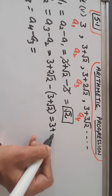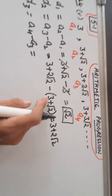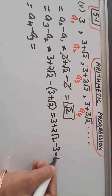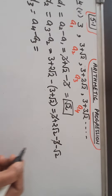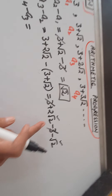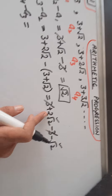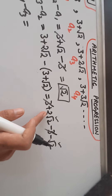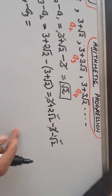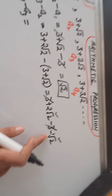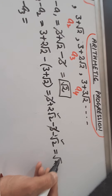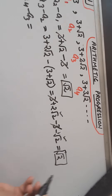So: 3 plus 2 root 2, plus minus (-3), minus plus (-root 2). So plus 3 and minus 3 cancel out. Now we have 2 root 2 and root 2 — these are like terms. So 2 root 2 minus 1 root 2 gives us root 2. So this is the second common difference D2 equals root 2.